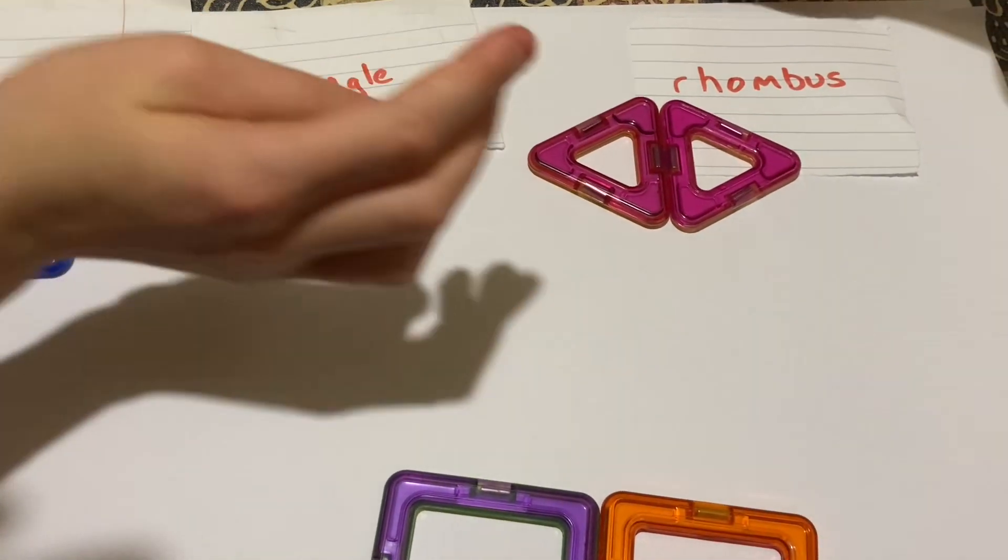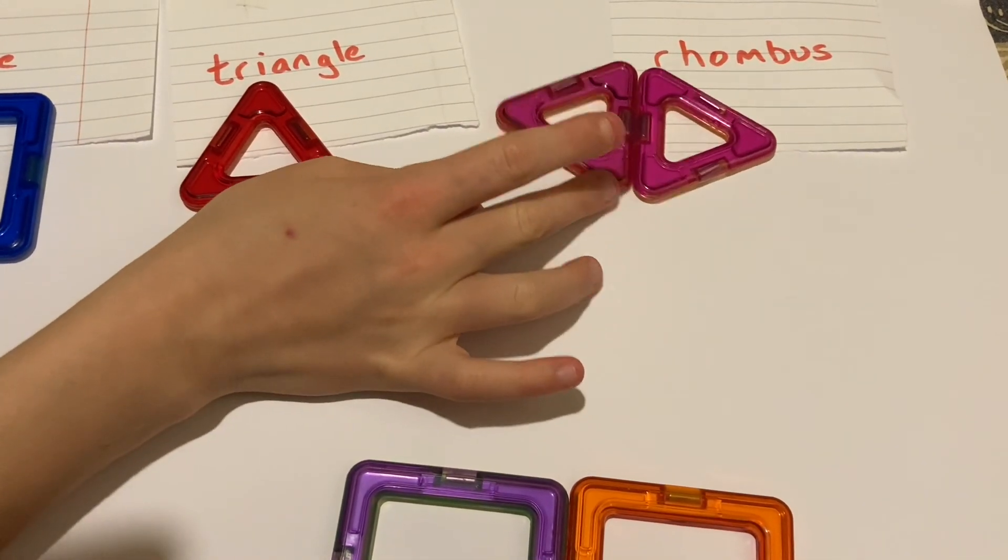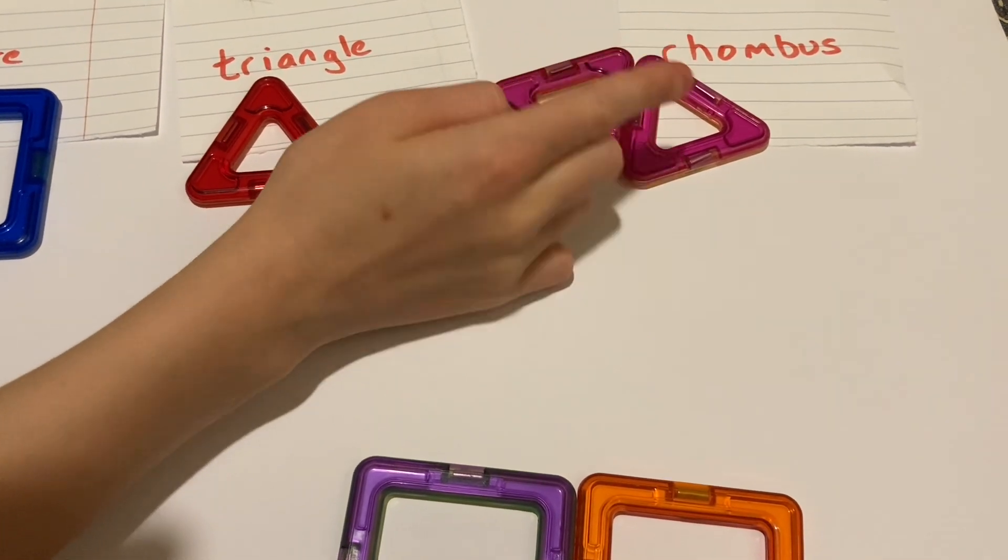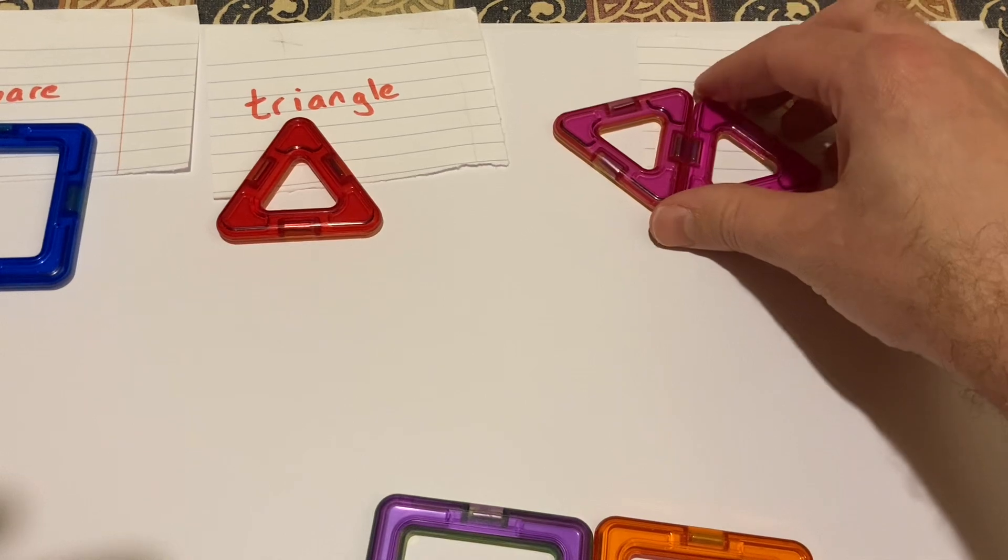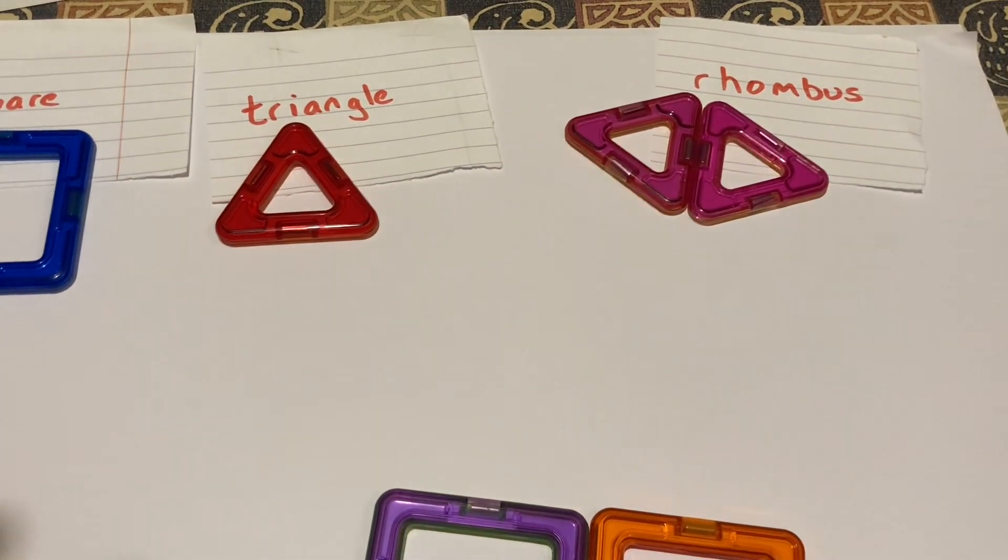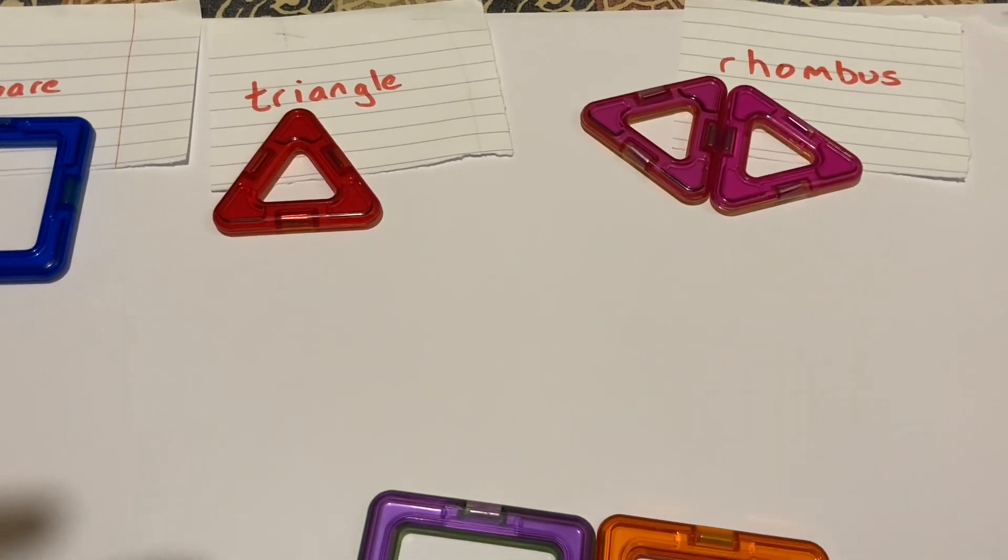And what properties are there with that? Well, it has... how many sides? One, two, three, four. Yeah, four equal sides, but there's not a right angle. So it's kind of like a square that's been pushed onto its sides.